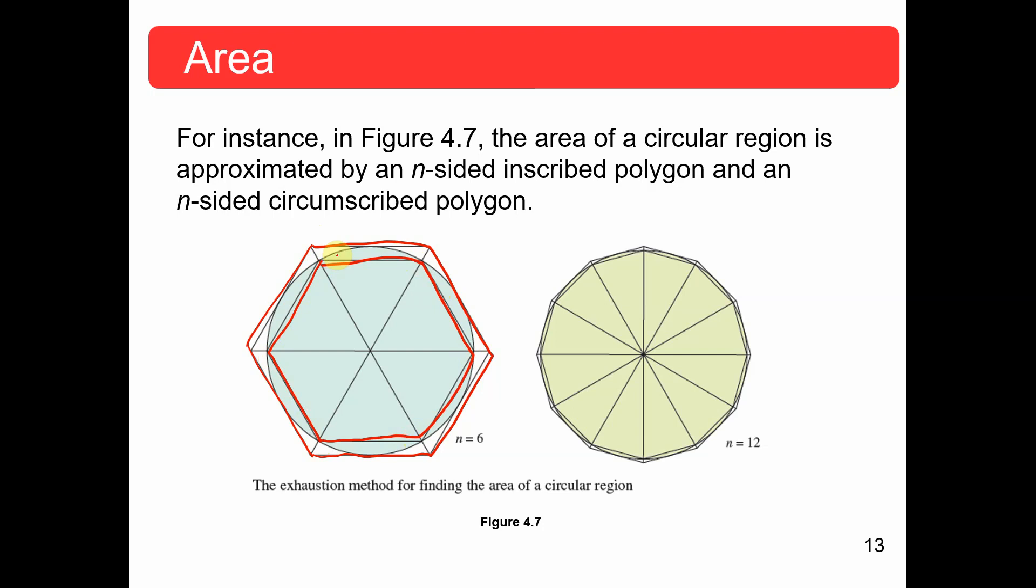And notice that this is a hexagon. I'll let n equal six. So notice if we let n be bigger, like n equals 12, we're talking about a 12-sided polygon. Notice the difference here. Here, you've got a pretty big gap in here that we're missing.